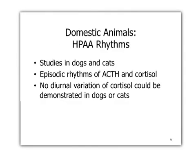What do we know about these rhythms in dogs and cats? First of all, we know there are episodic rhythms of ACTH and cortisol, but there are no apparent diurnal variation patterns seen for cortisol in dogs and cats. This is only important to us insofar as we normally try to mimic Mother Nature's patterns when we want to give glucocorticoids in as physiological a fashion as we can, timing-wise and sometimes dose-wise. So just to know that we don't have a particular diurnal variation of cortisol shown, at least in the dog and the cat.